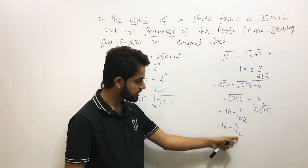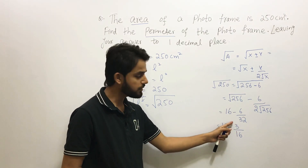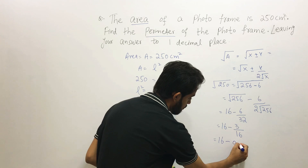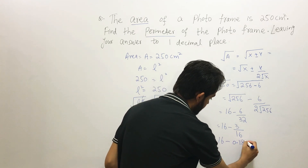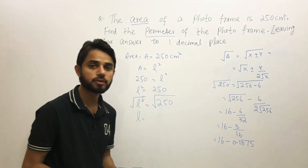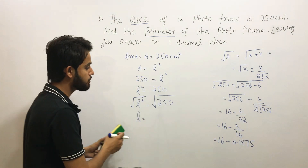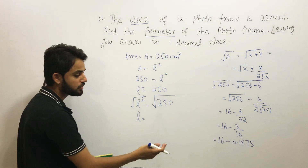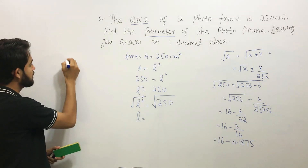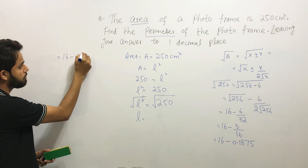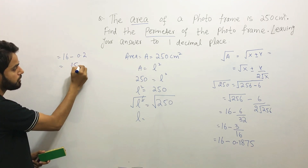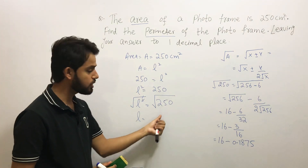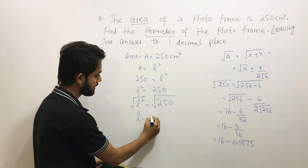Dividing 3 by 16 gives 0.1875. Rounding to one decimal place gives 0.2. So 16 minus 0.2 equals 15.8. Therefore, the square root of 250 is approximately 15.8, meaning L equals 15.8 centimeters.